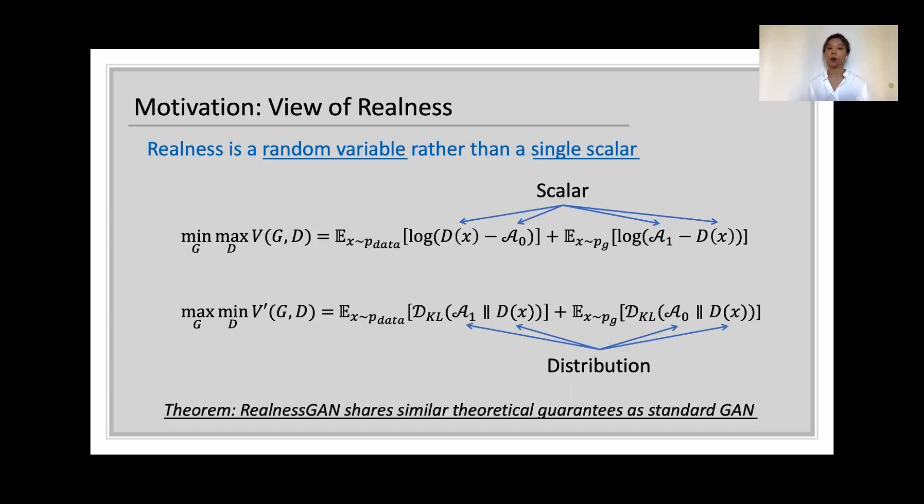For simplicity, we'll refer to our work as RealnessGAN in the following context. Theoretically, RealnessGAN and the standard GAN share similar guarantees on optimality and convergence, and the proof can be found in our paper. To bring more insight, next we'll move on to some empirical analysis.